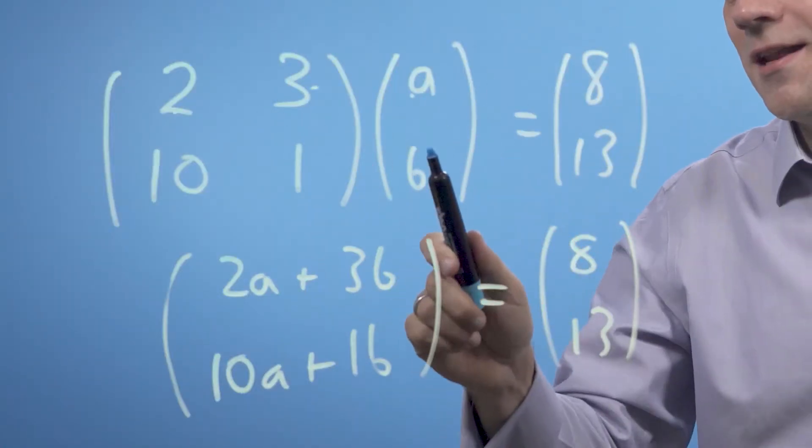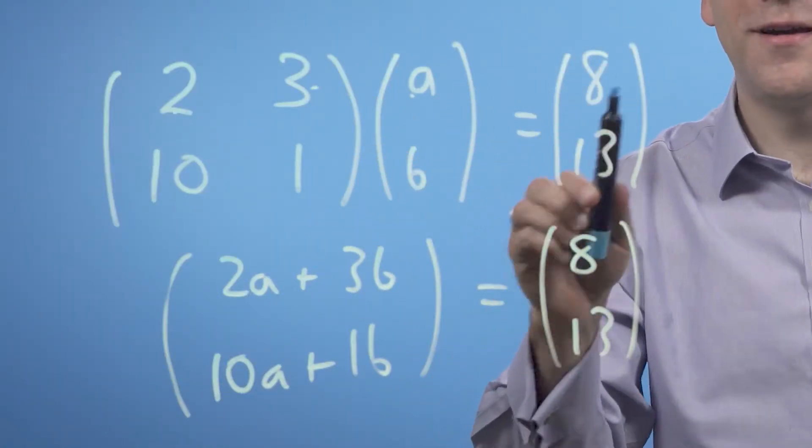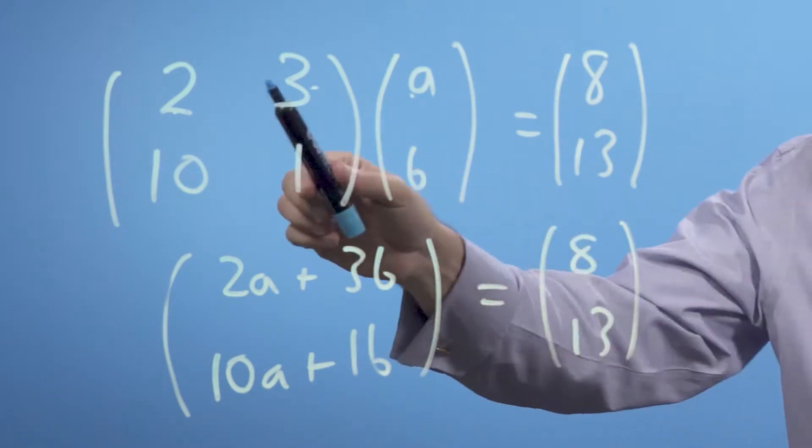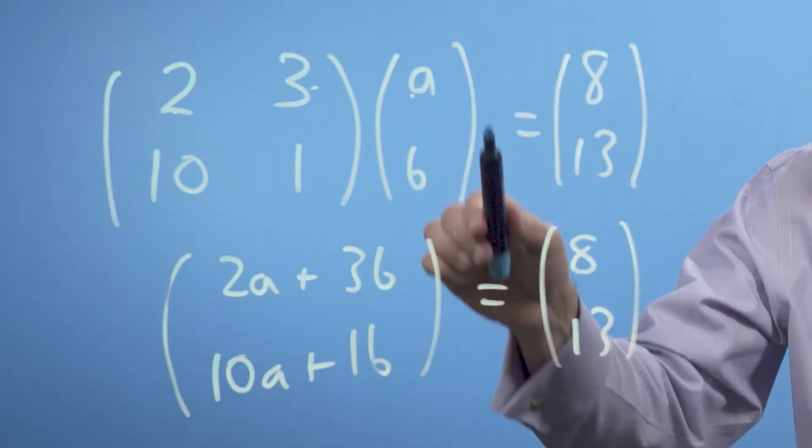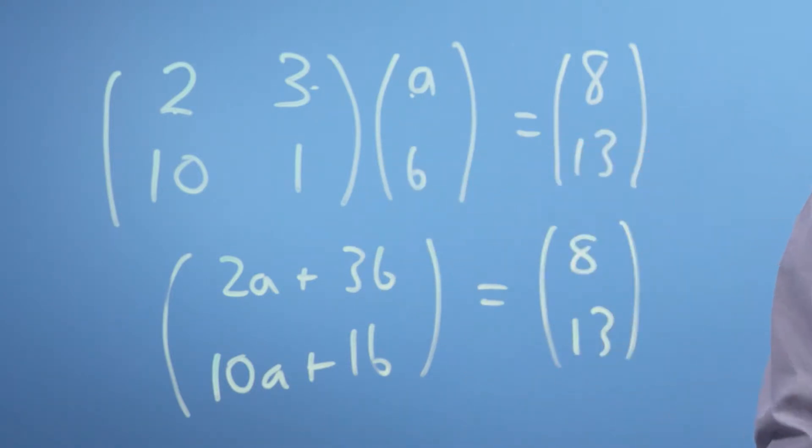But this is really handy because these things, notice, look like vectors. So this matrix operates on this vector to give this other vector. And my question is, what vector transforms to give me this guy on the right?